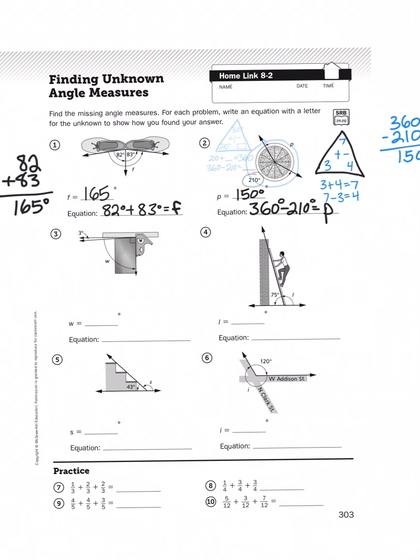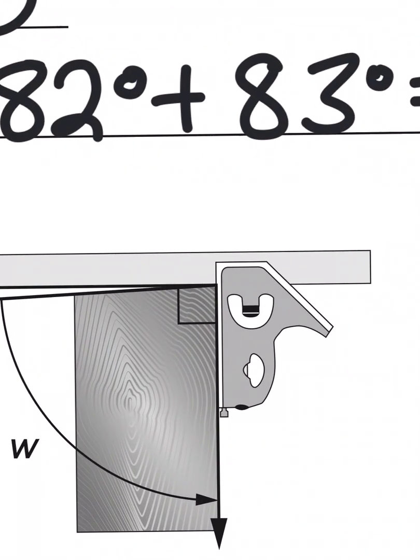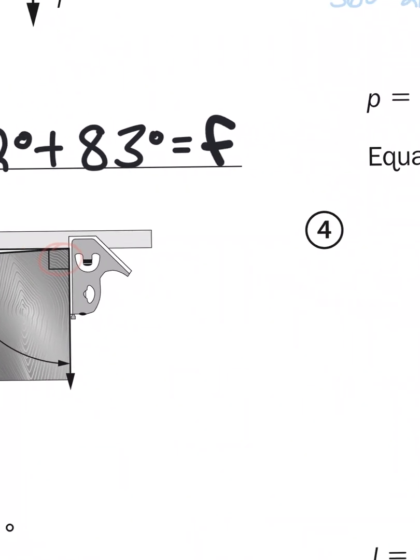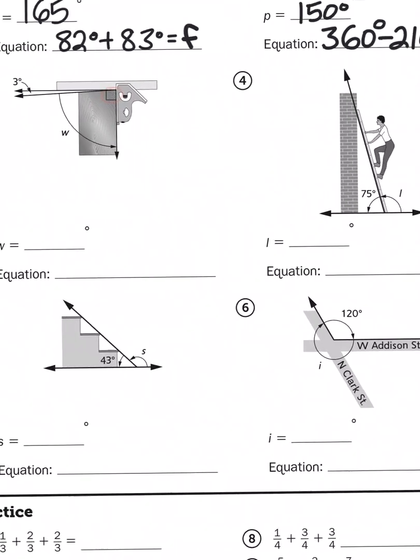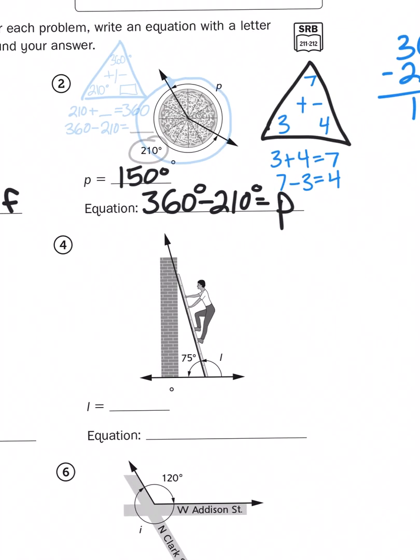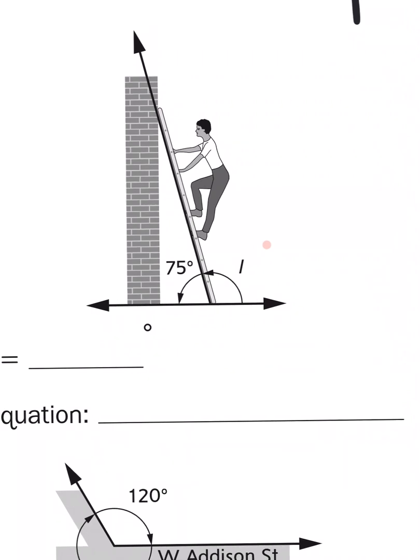Like in number three, that little telltale square in the corner right there, that tells us that that's a 90 degree angle, or a right angle. Same goes for number four, where we see that semi-circle arch of curly arrows. That means that we have a total of 180 degrees all together.